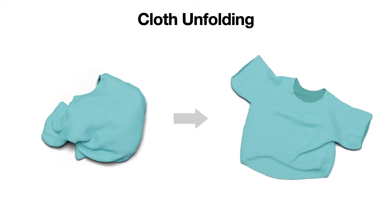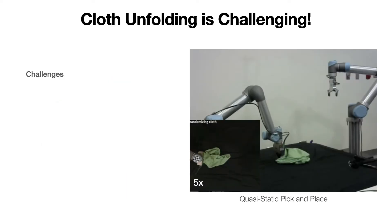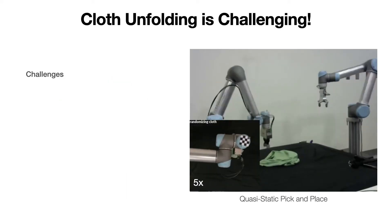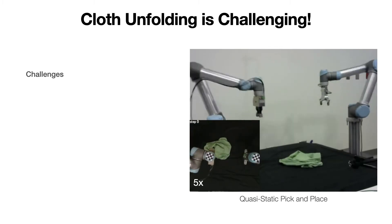In this project, we focus on the task of cloth unfolding, where the objective is to maximize the coverage of the cloth. Because this unfolding reveals key features of the cloth, it is a common first step for most cloth manipulation pipelines. While the objective of cloth unfolding is simple, actually doing it well is not.